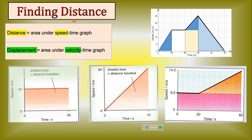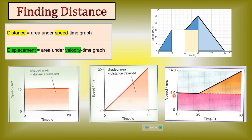Finding distance from a speed-time graph: the distance equals the area under the speed-time graph, and the area under a velocity-time graph gives an object's displacement. The area under a straight-line graph can be broken into rectangles and triangles. Here the area of the rectangle is 60 multiplied by 6 equals 360 meters. For the triangle: one-half times base (60 minus 20 = 40) times height (8) equals 160 meters. Total distance traveled is 360 plus 160 equals 520 meters.